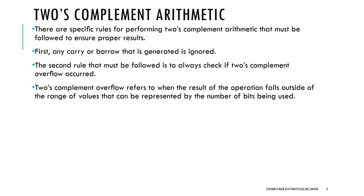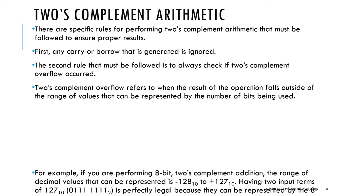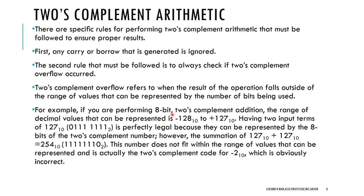2's Complement overflow refers to when the result of an operation falls outside the range of values that can be represented by the number of bits being used. For example, an 8-bit 2's Complement number can represent the range minus 128 to plus 127. If we compute 127 plus 127, the answer is 254, which is outside this range — so the number has overflowed and the answer is wrong.